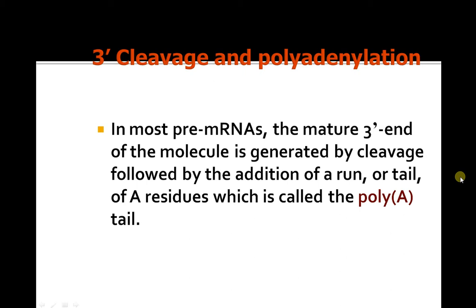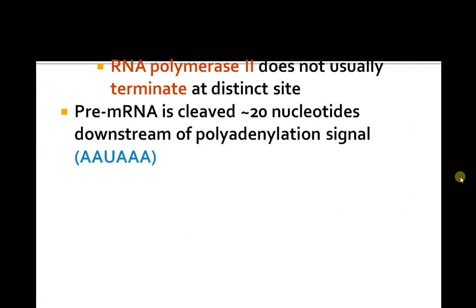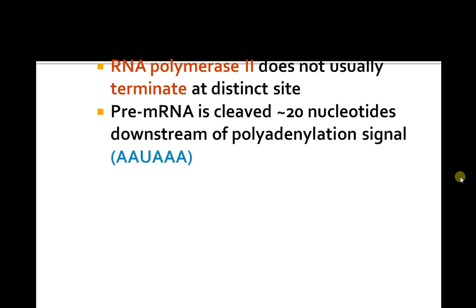3' cleavage and polyadenylation: for most pre-mRNAs, the mature 3' end of the molecule is generated by cleavage followed by the addition of adenylate residues, which is called poly-A tail. RNA polymerase 2 does not usually terminate at a fixed site; the pre-mRNA is cleaved 20 nucleotides downstream of the polyadenylation signal.